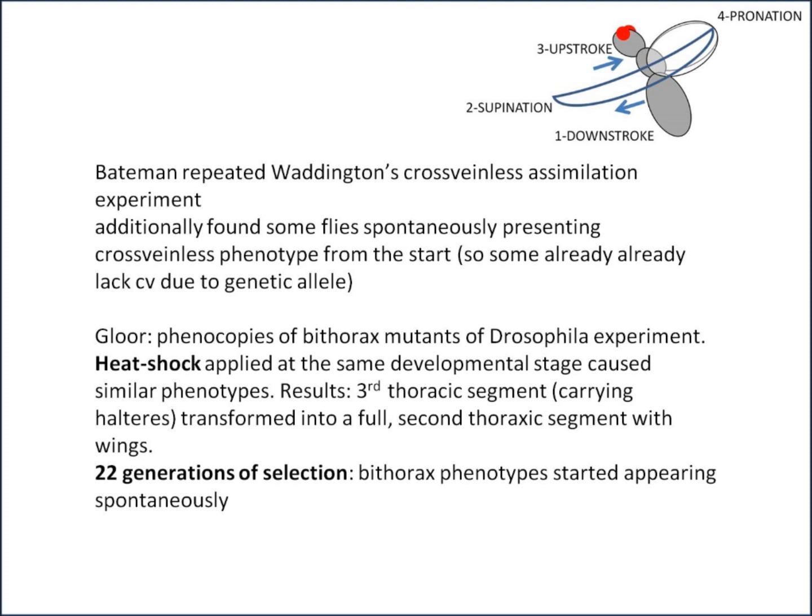Gloor obtained phenocopies of bithorax mutants of Drosophila by submitting eggs to ether vapour; heat shock applied to the same developmental stage caused similar phenotypes. The result was that the third thoracic segment, which normally carries halteres, was transformed into a full second thoracic segment with wings. After 22 generations of selection, bithorax phenotypes started appearing spontaneously.